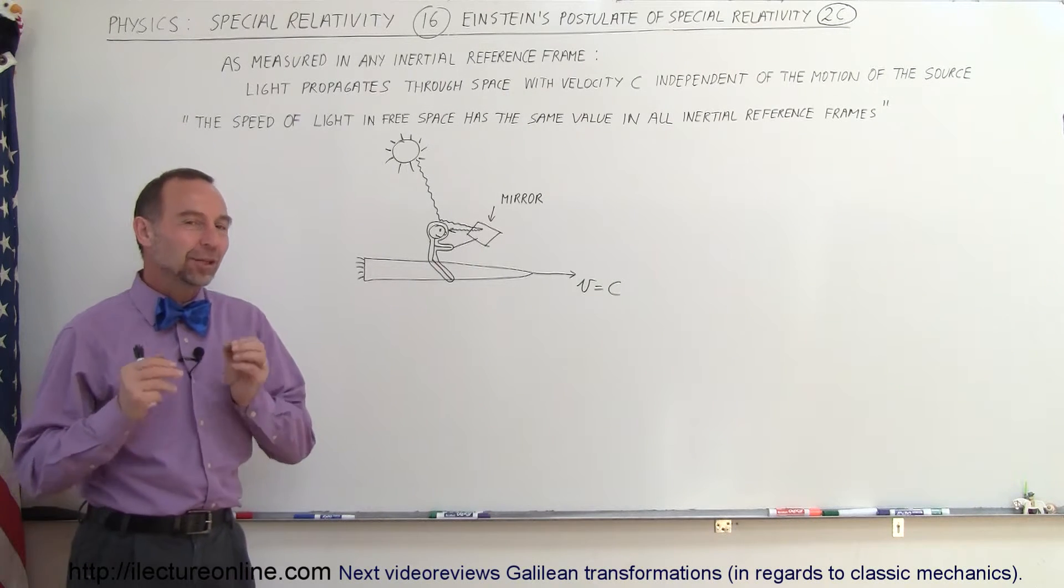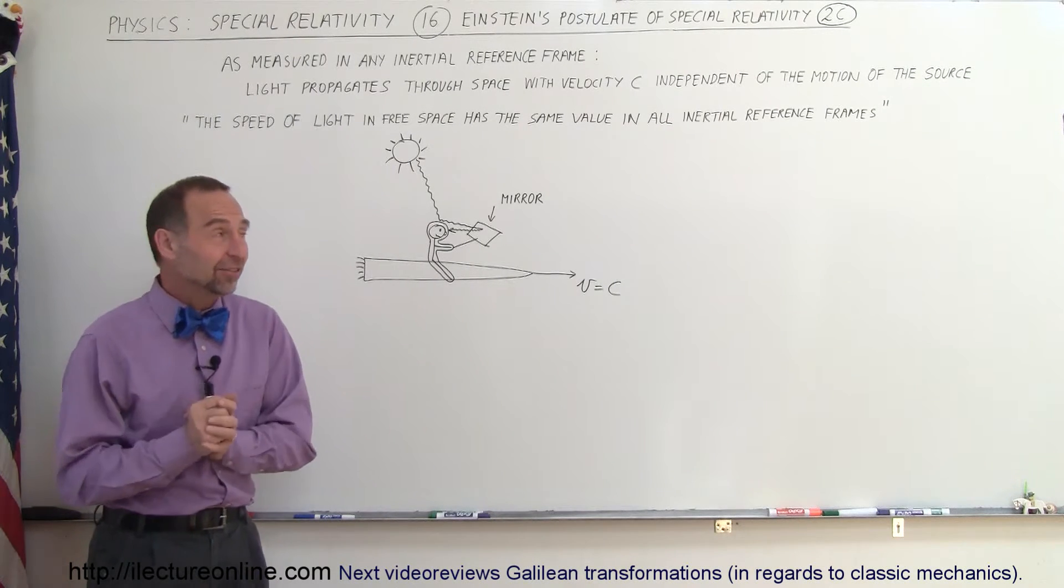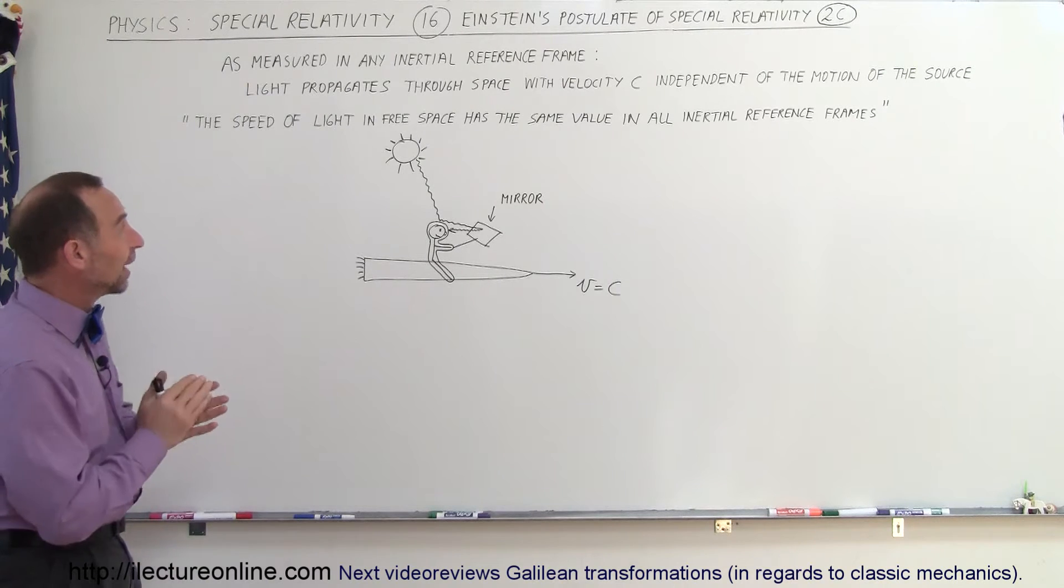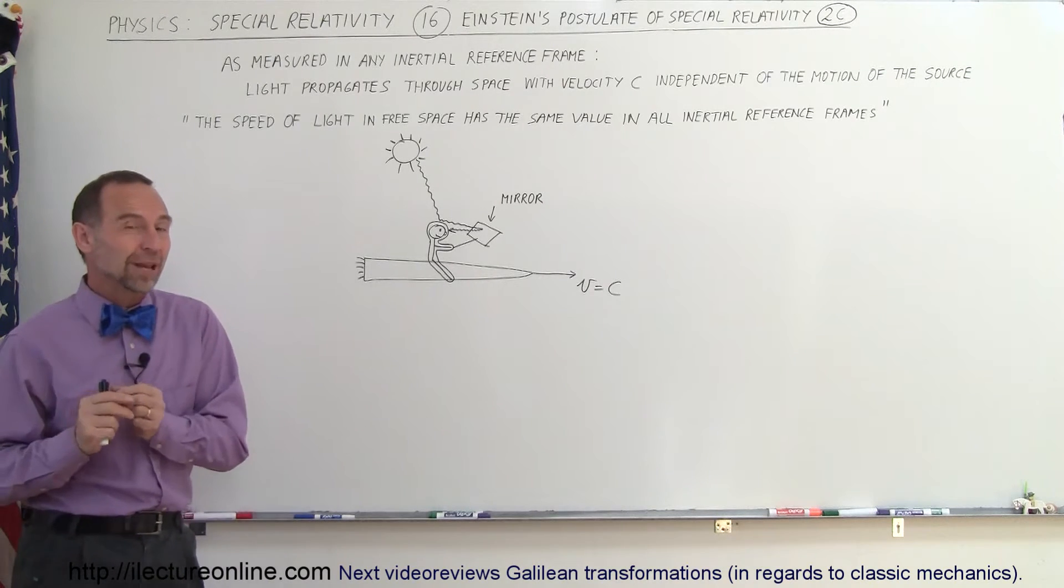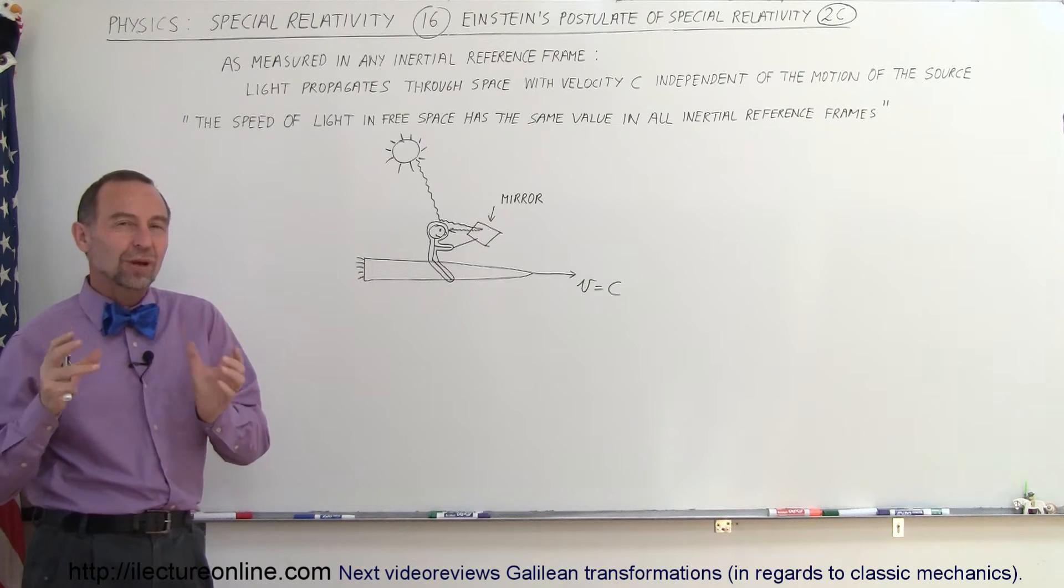Welcome to ElectronLine. Another outfall of Einstein's postulate, where he said that the speed of light in free space has the same value in all inertial reference frames, gave us another really strange problem.